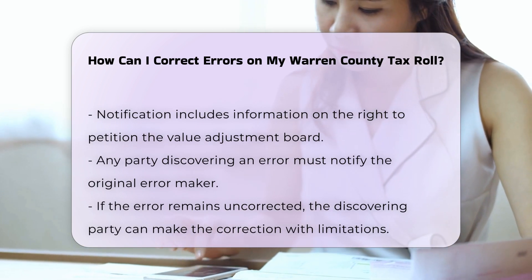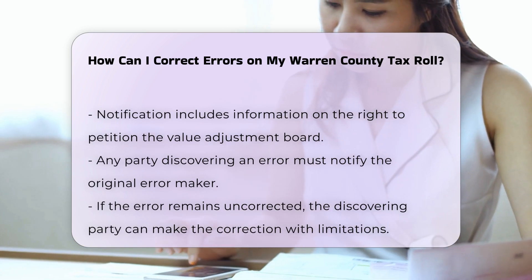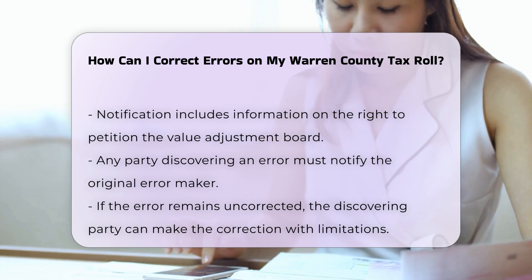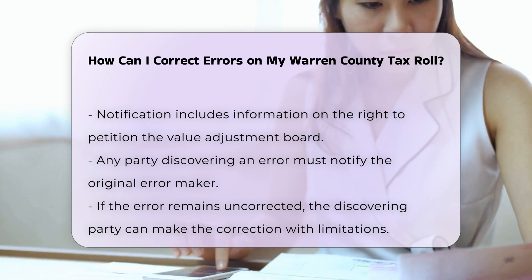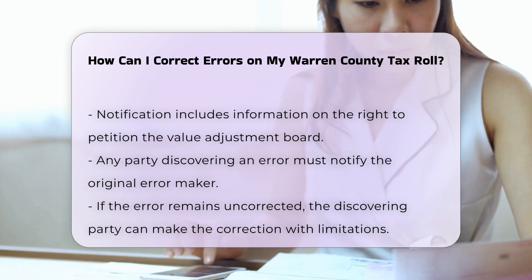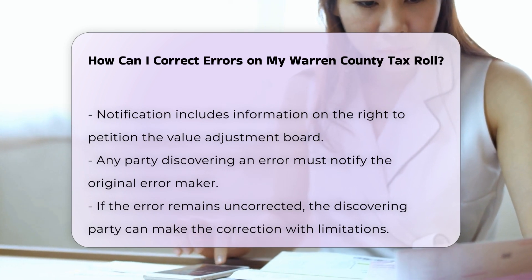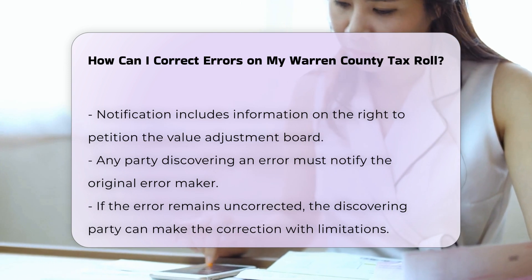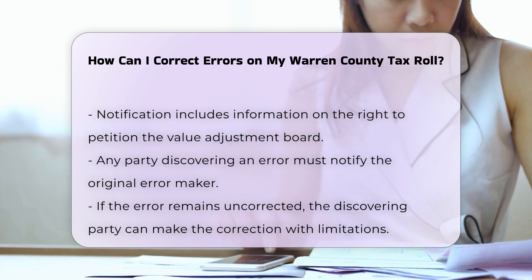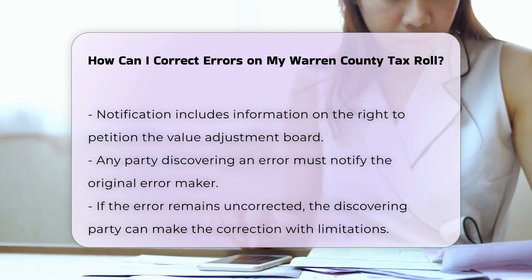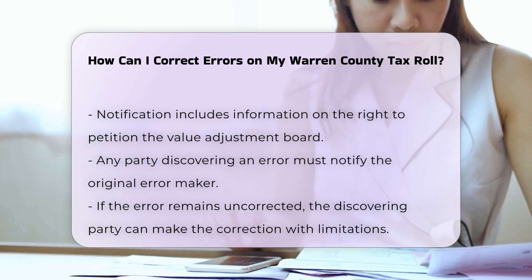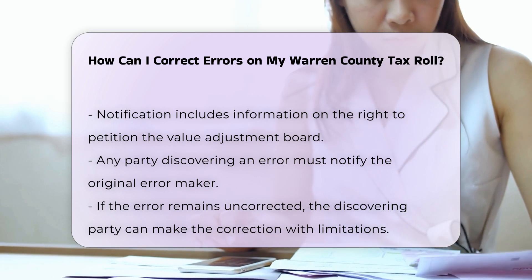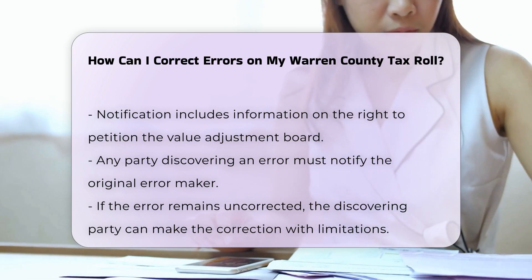Reporting errors: any party discovering an error must notify the person who made the error. If the error is not corrected, the discovering party can make the correction, subject to certain limitations. Corrections are valid from the date of the first act or omission and do not affect the collection of tax.